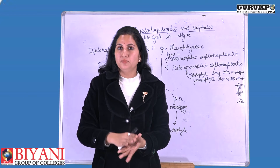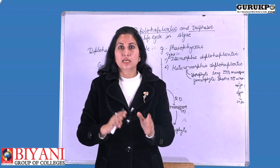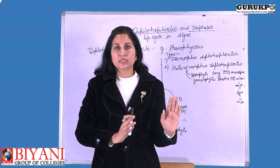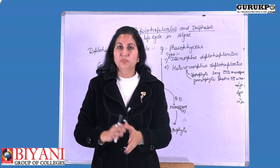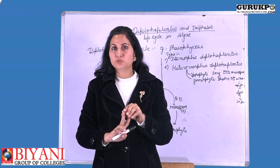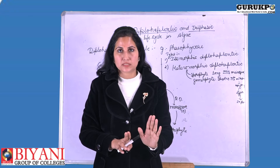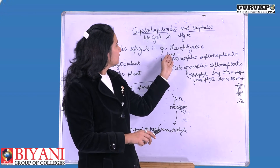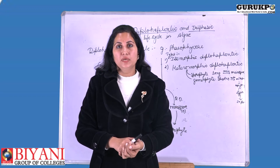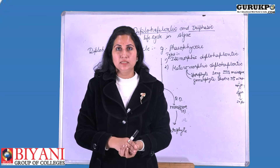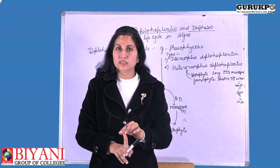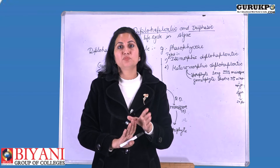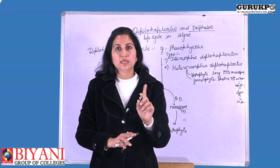In the haplodiplobiontic type of life cycle, there are two types of plants found. In the previous two types of life cycles, we saw that only one type of plant is found — be it sporophytic or gametophytic in nature. But here we can see two types of plants in a single species. Examples of such a life cycle are the members of Phaeophyceae. There are two types of plants: one is the sporophytic plant and another is the gametophytic plant — that is, haploid and diploid plants are found in one species only.